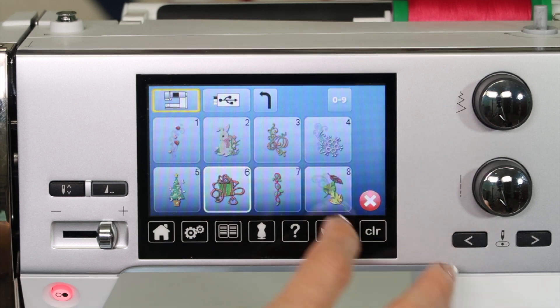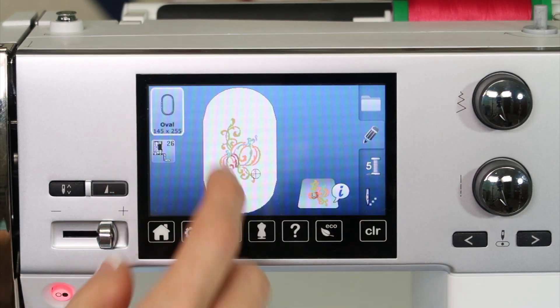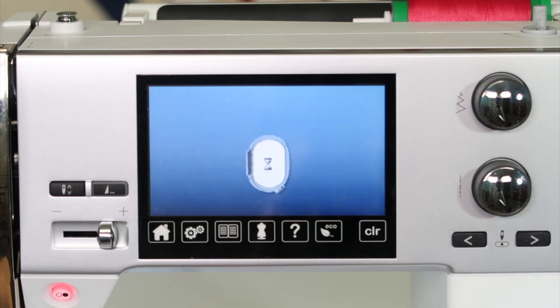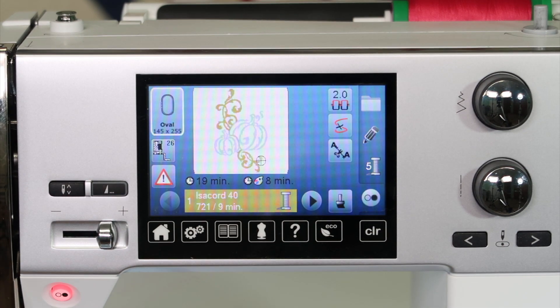Those are just a quick little overview of designs and how to move them, size them, get around the screen. When we're ready to embroider, we will have more options when we get to hooping our fabric, and then starting to pick our colors.